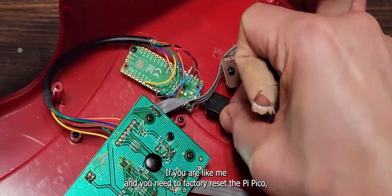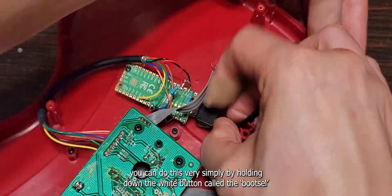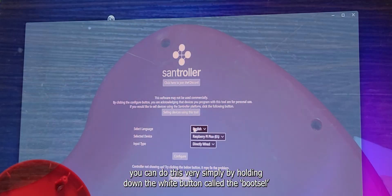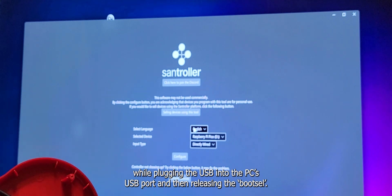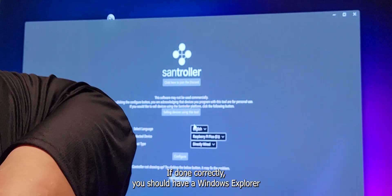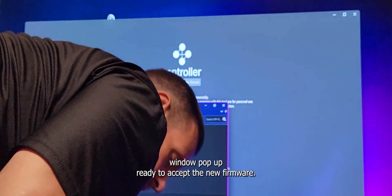If you are like me, and you need to factory reset the Pi Pico, you can do this very simply by holding down the white button called the boot select while plugging the USB into the PC's USB port and then releasing the boot select. If done correctly, you should have a Windows Explorer window pop up ready to accept the new firmware.